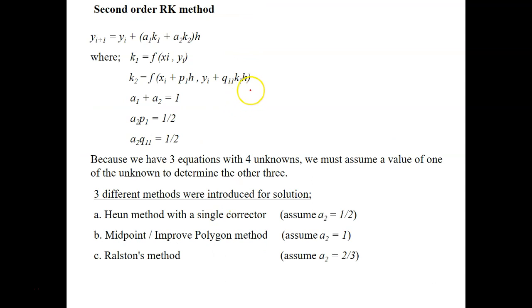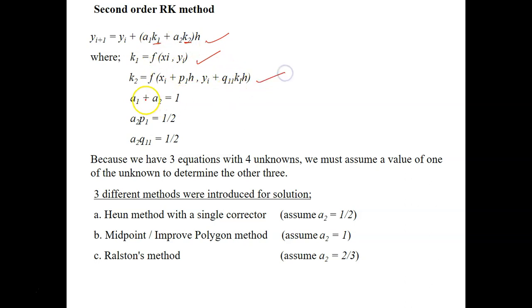Let's move on to the second order Runge-Kutta method. The formula for the second order is: Y(i+1) equals Y(i) plus (A1·k1 plus A2·k2)·h. Here k1 is the slope of the point (xi, yi) and k2 uses the updated point with the unknowns. The constraints give us: A1 plus A2 equals 1, A2·p1 equals 1/2, and A2·q11 equals 1/2.